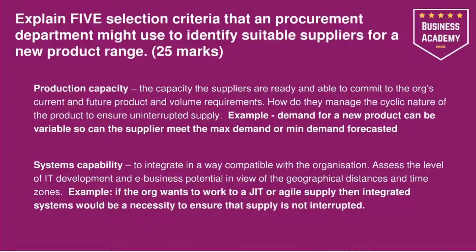Production capacity — this is the capacity that suppliers are ready and able to commit to the organisation's current and future product and volume requirements. In other words, can they meet your current needs in terms of capacity and your likely future needs? How do they manage the cyclical nature of the product to ensure uninterrupted supply? We need security of supply to make sure they can meet it at all times. For example, demand for a new product can be variable — can the supplier meet the maximum demand we believe could happen, or the minimum demand forecasted? Capacity is key because we need to be able to get it to market to generate any sort of profit.